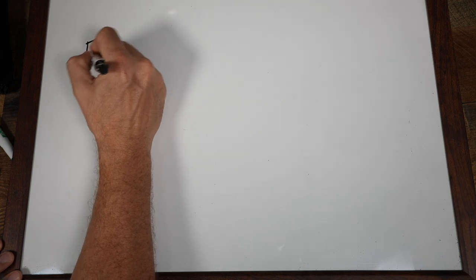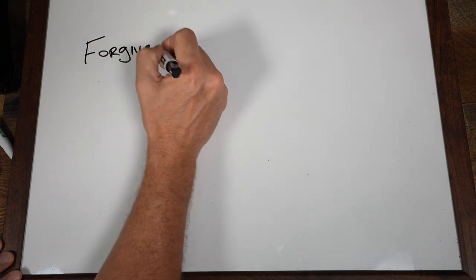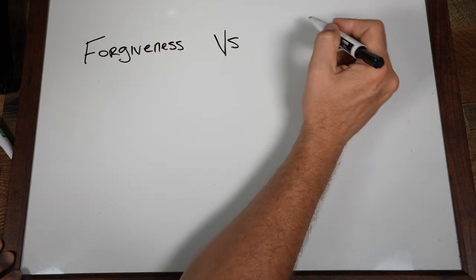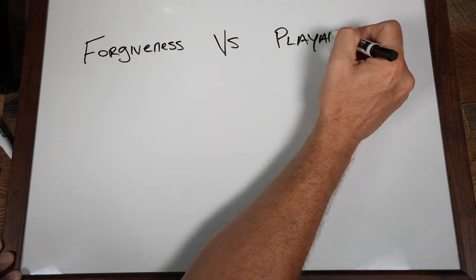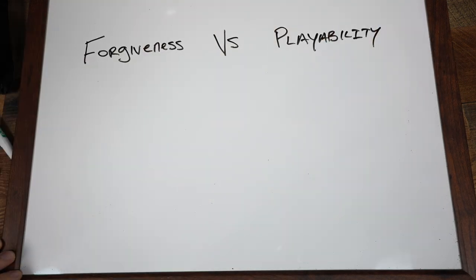When it comes to golf clubs and golf club manufacturing, there are two sets of opposing forces. Our first set of forces that are opposed to each other are going to be forgiveness and what I'll call playability.